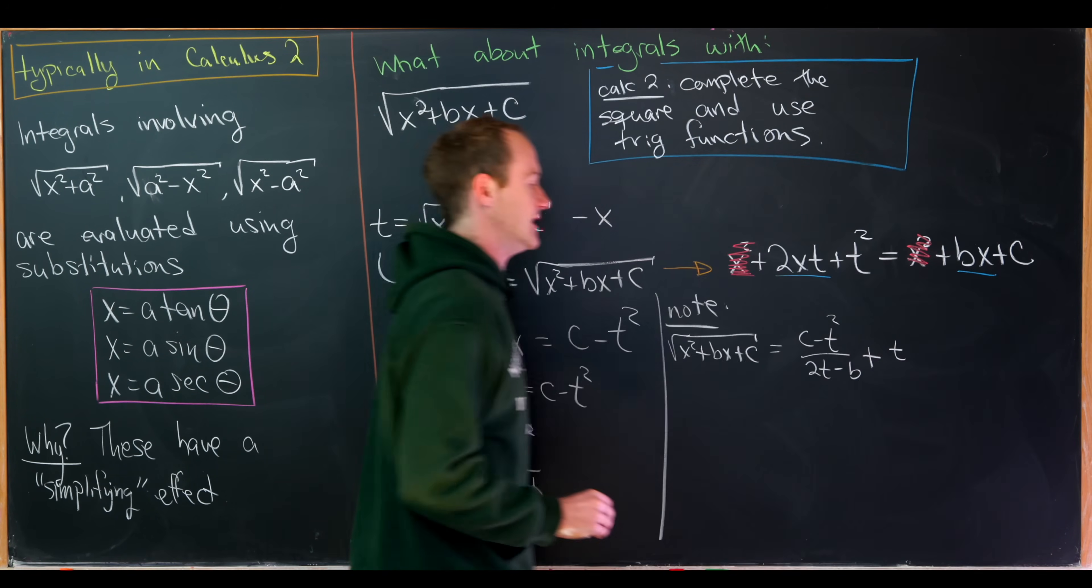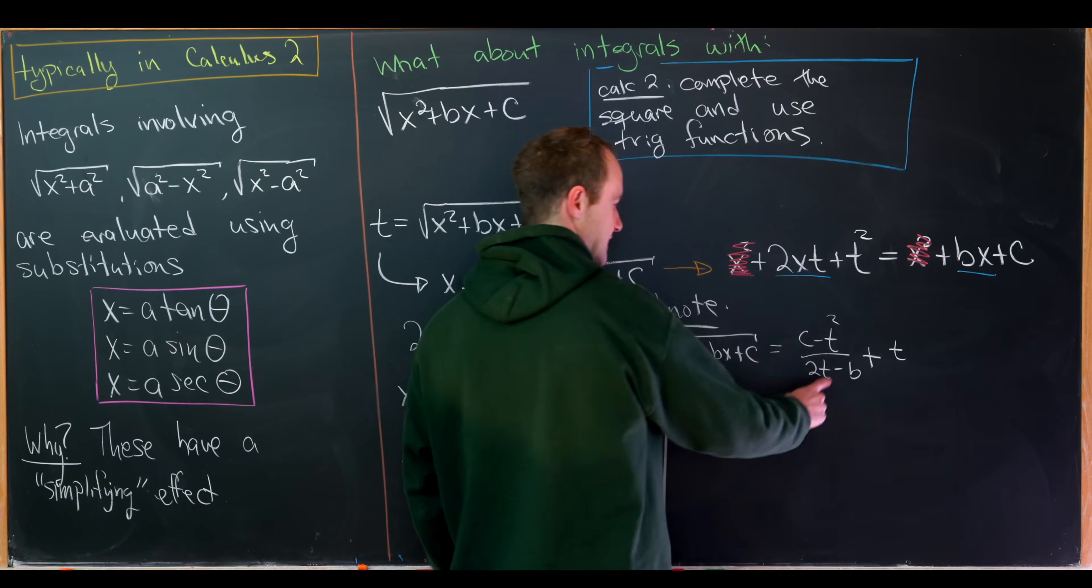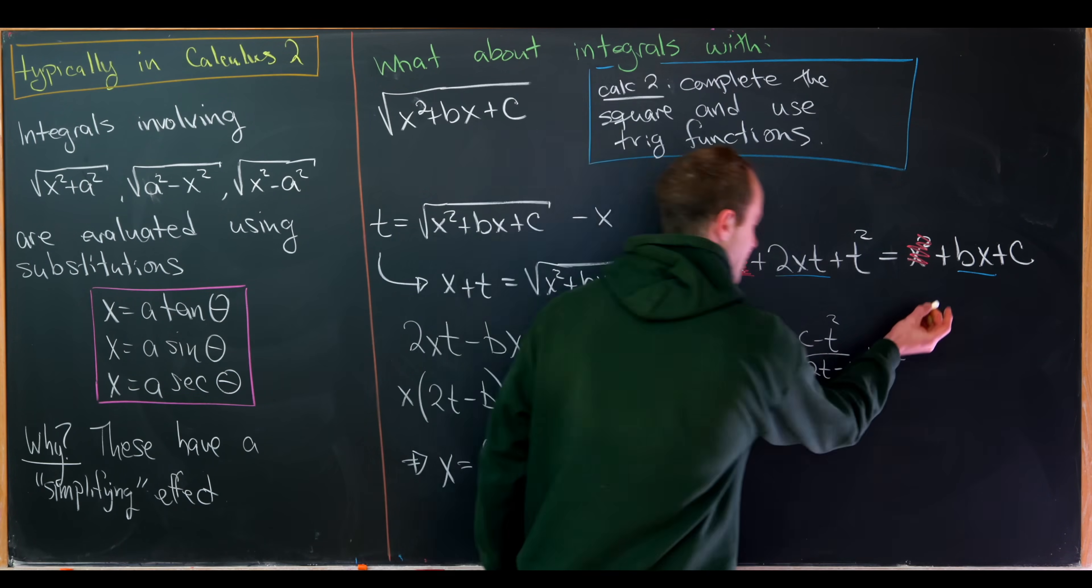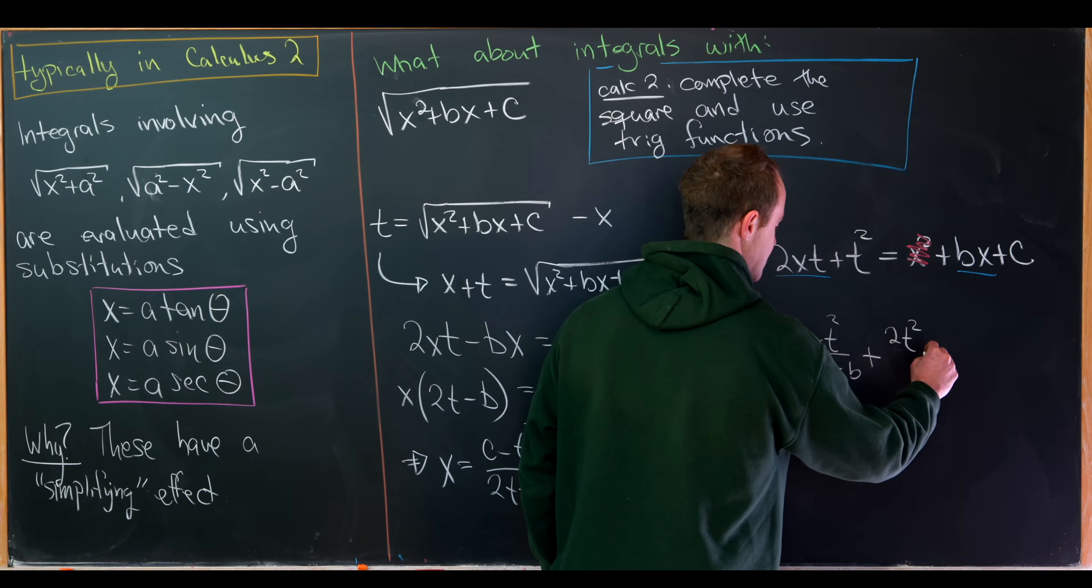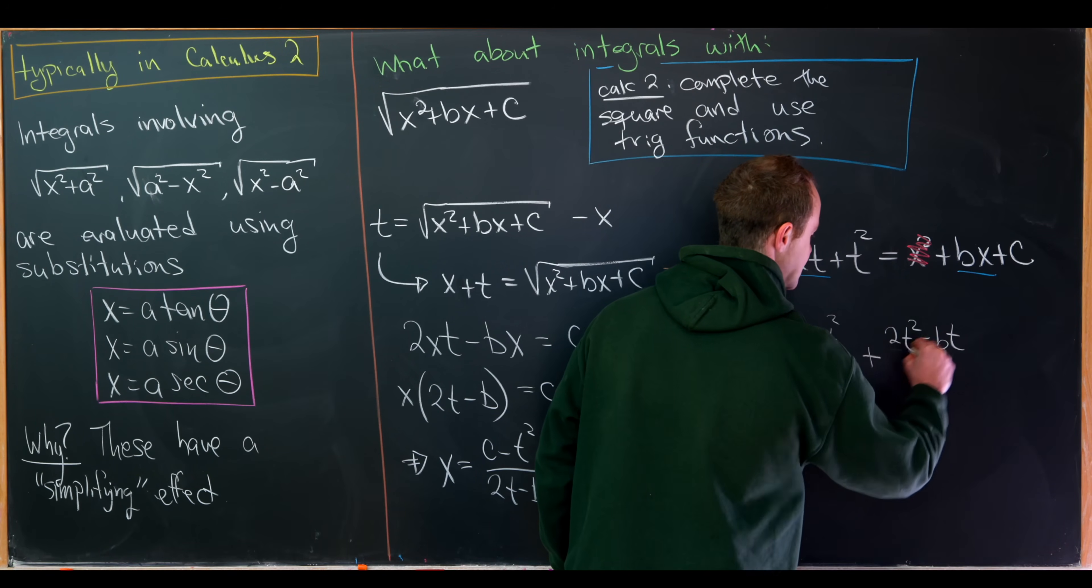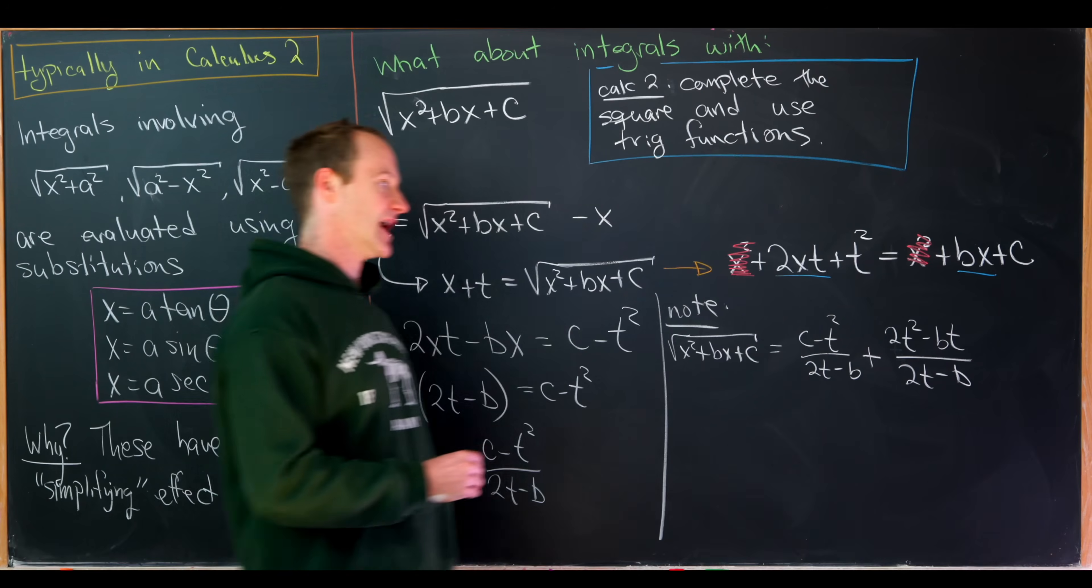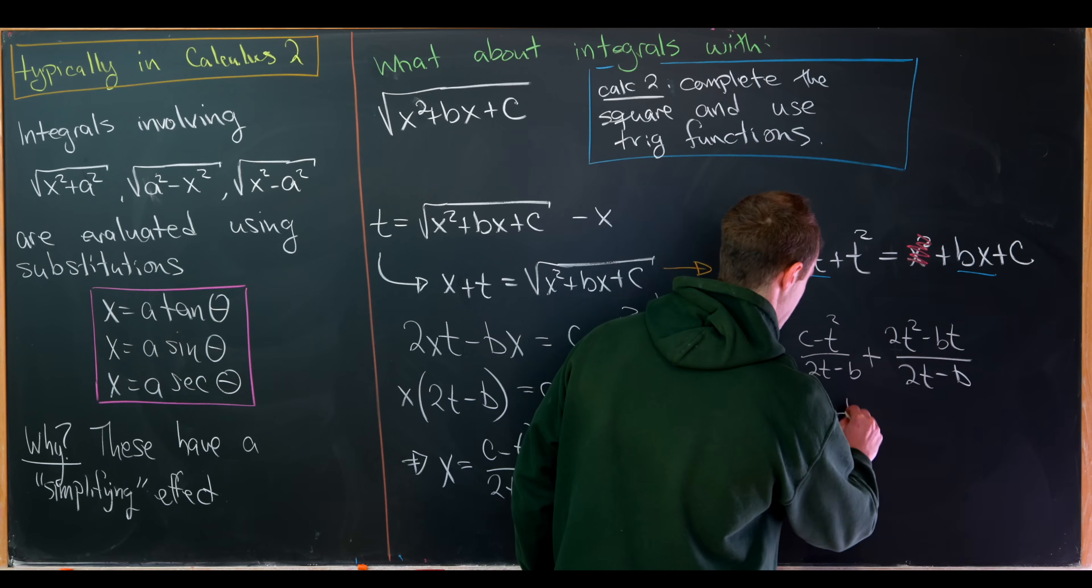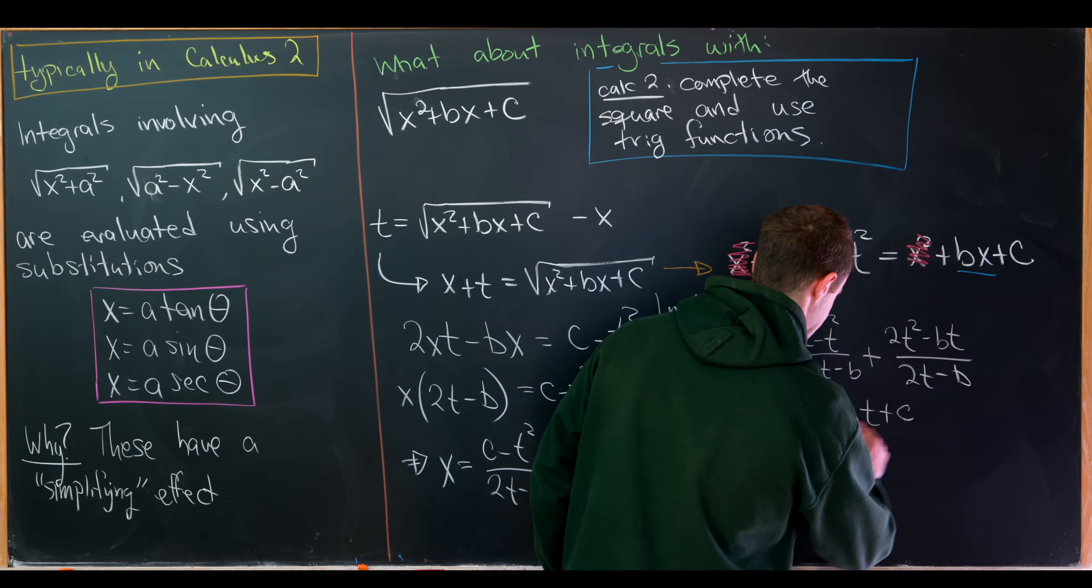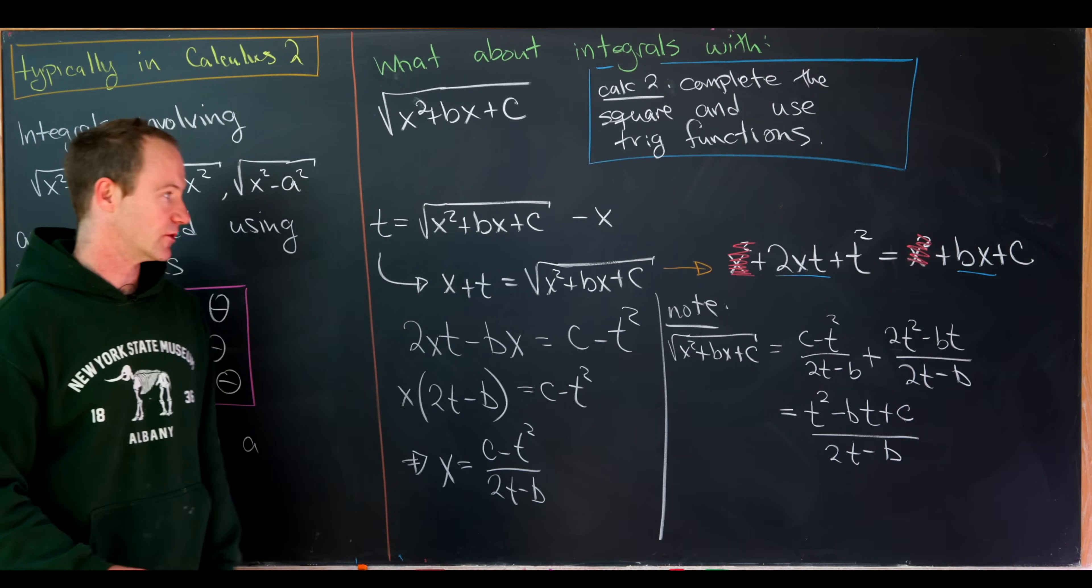So plus t. But we might as well give t a common denominator, this denominator being 2t minus b. That gives us 2t squared minus bt over 2t minus b. And now we can put those things together. And what will we have? Well, we'll have t squared minus bt plus c over 2t minus b. So that's your substitution for this square root object.